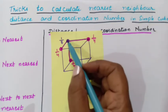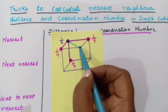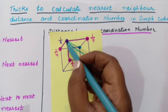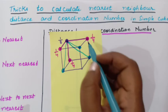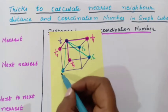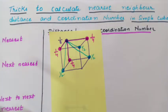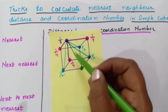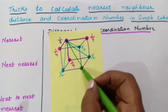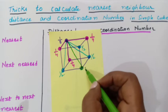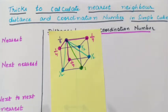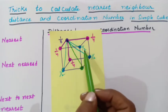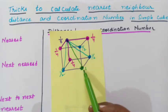Next will be the atom which is passing through the face diagonal. This atom, and then from here to this atom, and from here there is another face diagonal. So the contribution of these atoms will be 1/2. And next, the atom which is connected through the body diagonal — this is the body diagonal, and here the contribution of this atom will be 1. So remember: passing through the edge, contribution is 1/4; face diagonal, contribution is 1/2; body diagonal, contribution is 1.